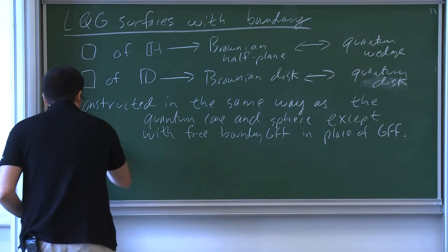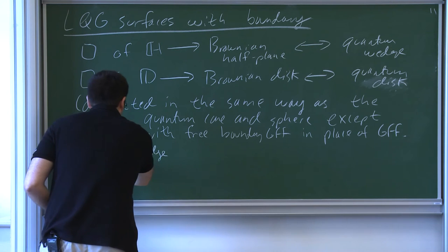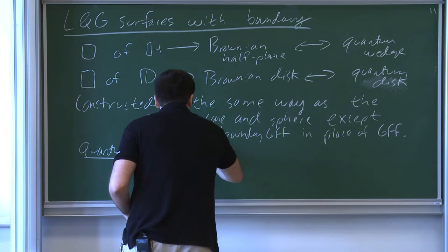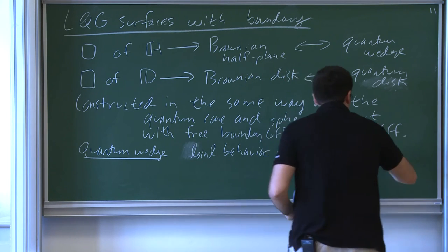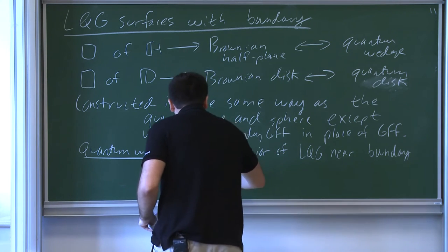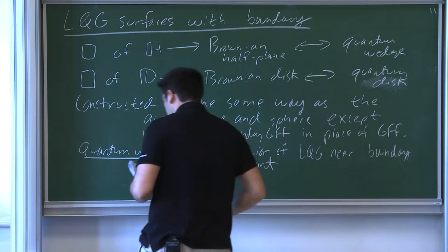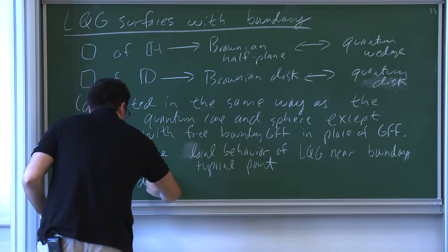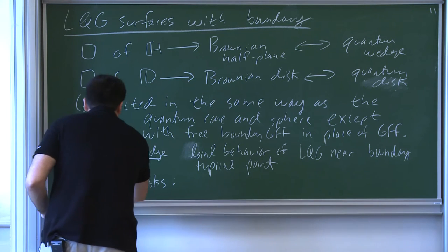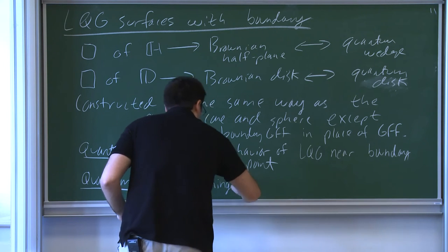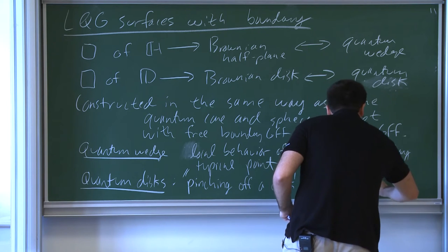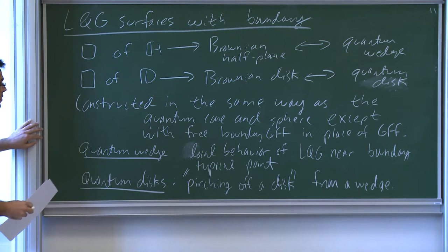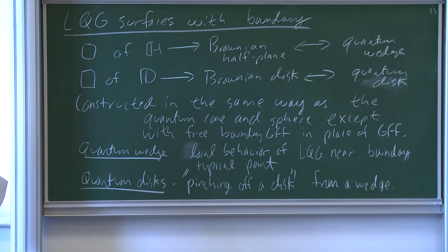To be slightly more precise: a quantum wedge is what you get when you describe the local behavior of a Liouville quantum gravity surface near a boundary-typical point. A quantum disk can be constructed by pinching off a disk — in some sense from a wedge. These are the objects that will appear in the more precise continuum analogs of the discrete statements I described a moment ago.